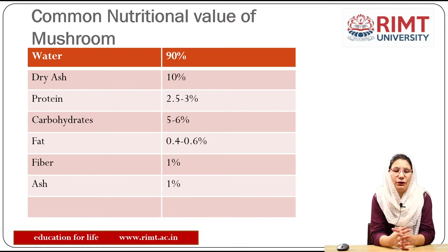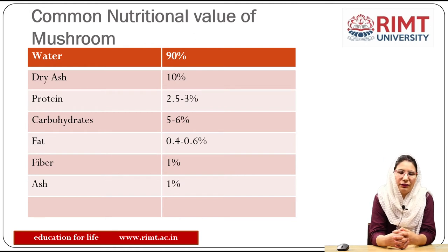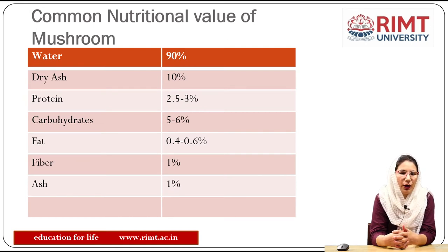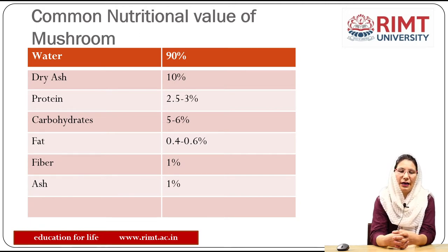Common nutritional value of mushroom: mushrooms contain a maximum of 90 percent water, then dry ash of 10 percent. Protein content of mushroom is 2.5 to 3 percent, carbohydrate 5 to 6 percent, fat 0.4 to 0.6 percent, fiber and ash 1 percent each.